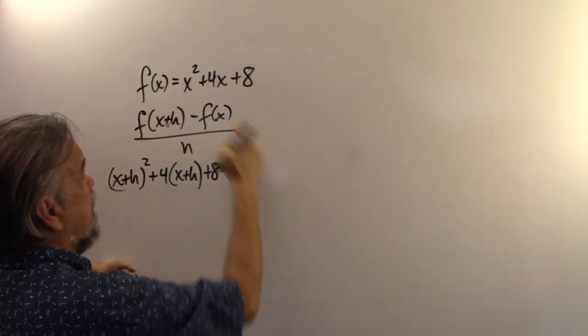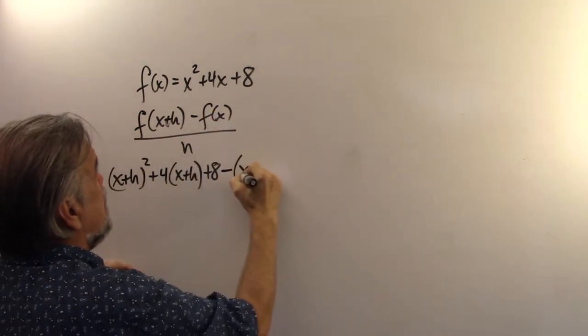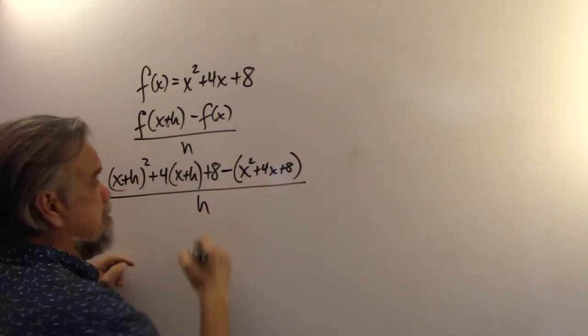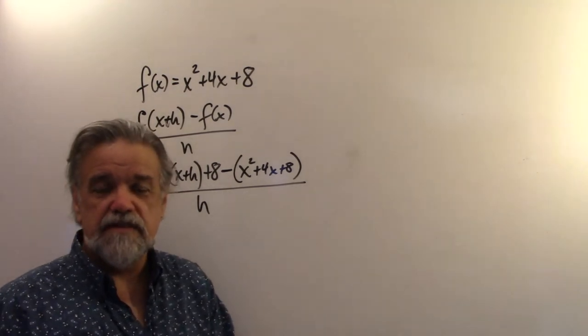Now, I want to subtract f of x. x squared plus 4x plus 8 over h. Arithmetic gets kind of messy, but it's okay.